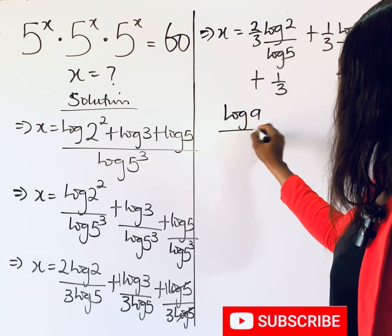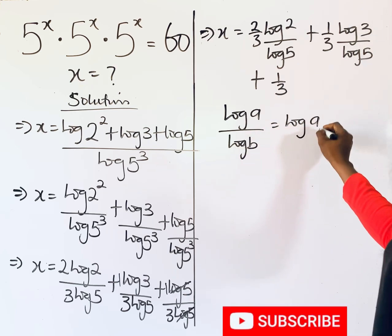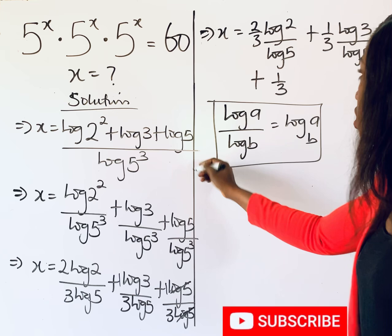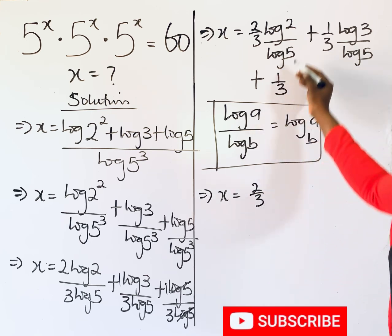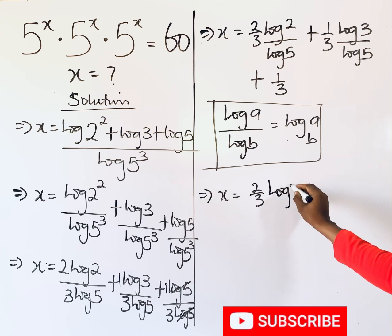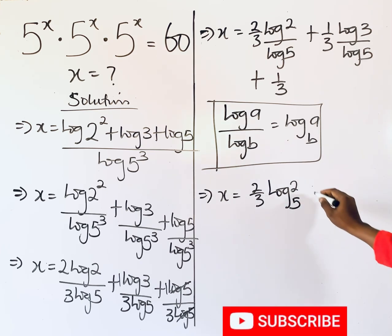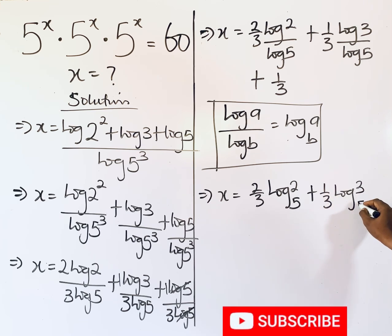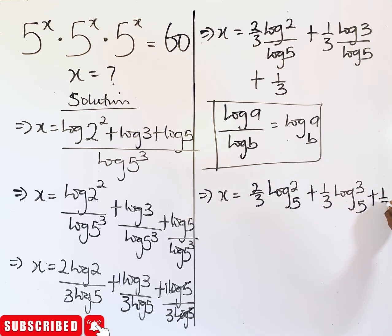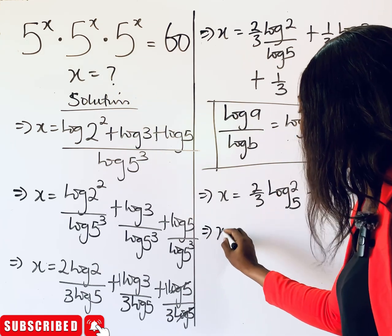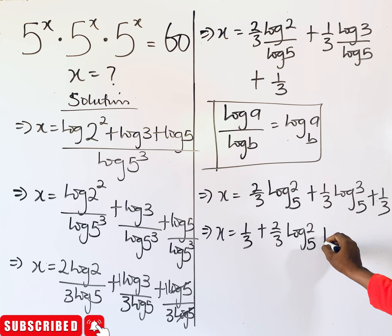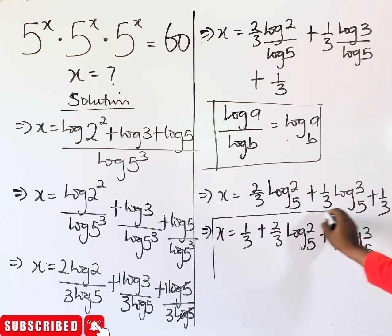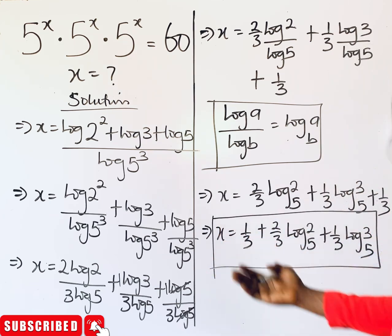Remember that log(a)/log(b) = log base b of a. Applying this, x = (2/3)·log₅(2) + (1/3)·log₅(3) + 1/3. Rearranging to look more elegant: x = 1/3 + (2/3)·log₅(2) + (1/3)·log₅(3). This is the simplified value of x.